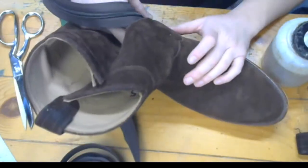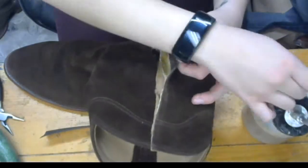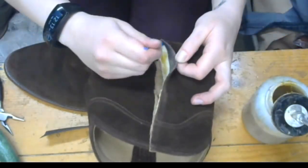I found a quad zipper that matches the boot as close as possible and started gluing that in between the inside of the suede and the inside of the liner.